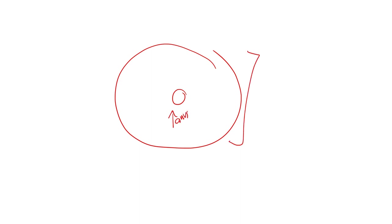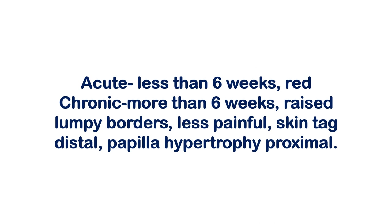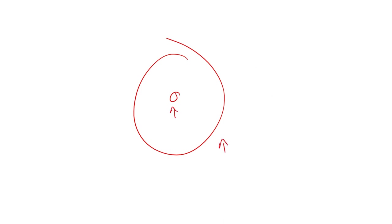Let me draw this out. Here's the anus in the middle and the surrounding anoderm. In an acute situation — less than six weeks — the most common location is the posterior midline, and the tear will be very red and extremely reddened around the area. That should help you lean toward an acute case, especially when they tell you the timeline is less than six weeks.